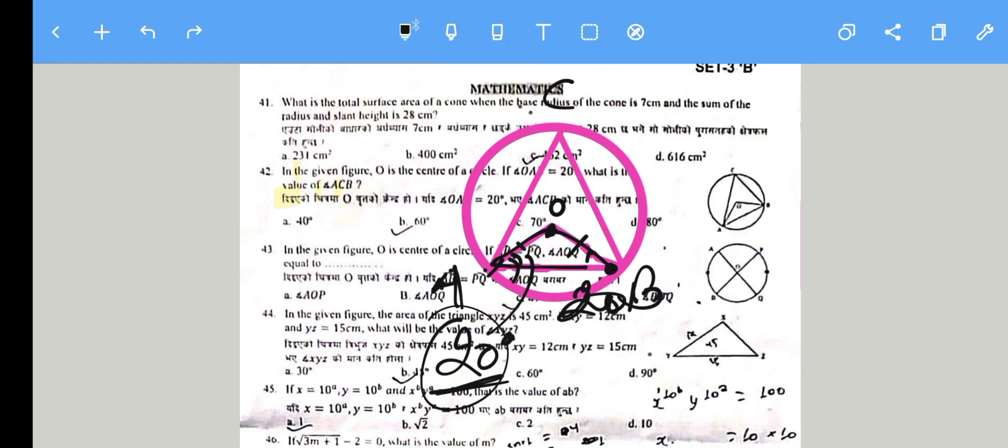We need to find this angle. The central angle is 140 degrees. The circumference angle (inscribed angle) is half of the central angle. So 140 divided by 2 gives us 70 degrees.